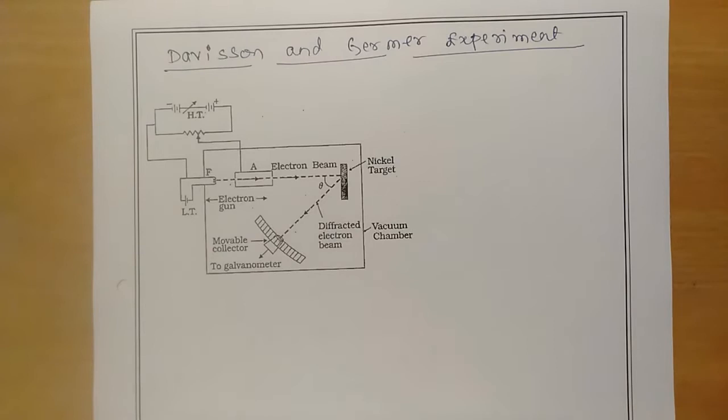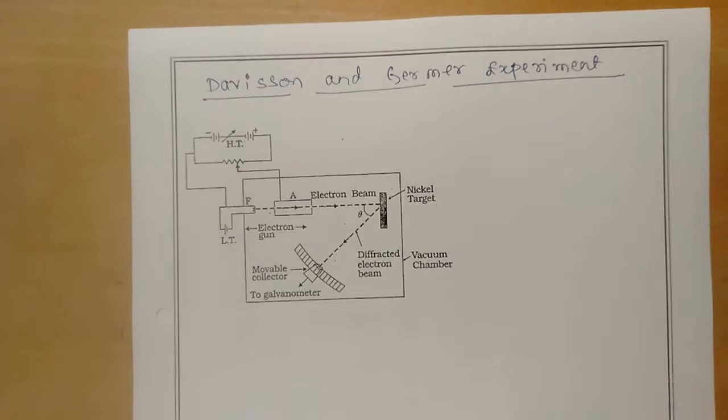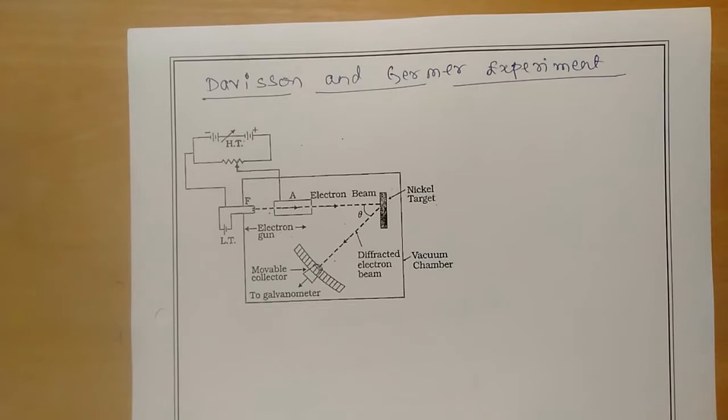Hello students, welcome back to my session. In this session we will be dealing with another important experiment — the Davisson and Germer experiment — which gave another proof for the wave nature associated with material particles which are in motion. The experimental arrangement for this particular Davisson and Germer experiment is as shown in the diagram.